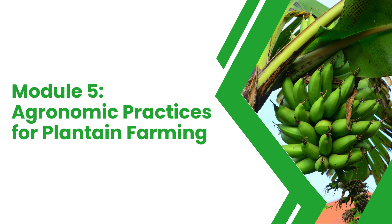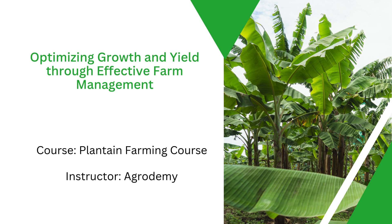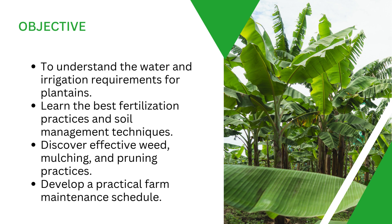Welcome to the fifth module of the plantain farming course. In this module we'll be addressing agronomic practices for plantain farming. The goal of agronomic practices is to optimize growth and yield through effective farm management. We've learned about preparation, setting up the farm, choosing what to use for planting, preparing the land, and eventually doing the planting. Now planting has happened — how do we optimize for growth with effective farm management?